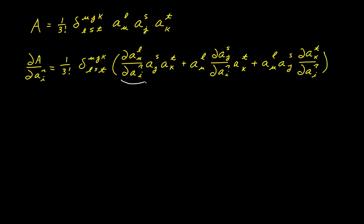Now take a look at this first factor right here. We've got the partial of A^L_U with respect to A^R_I. Well, when L is equal to R and U is equal to I, meaning they're the same element, then the result here is going to be 1. But in any other case the result is going to be 0. We can capture that relationship with a pair of delta terms: delta^L_R times delta^I_U will give us the same result.